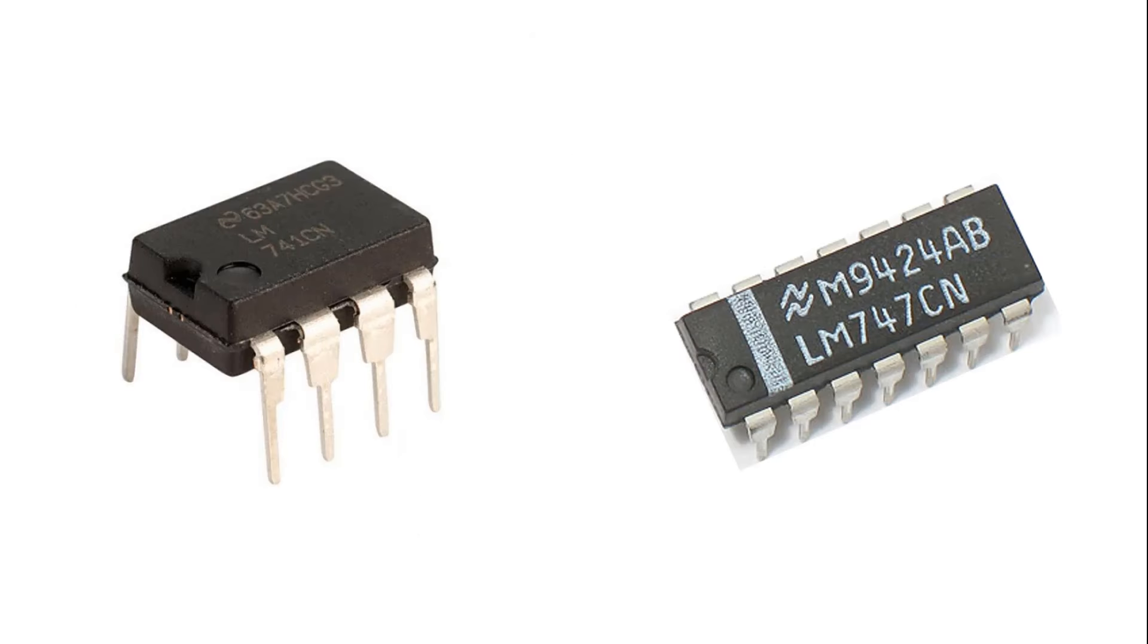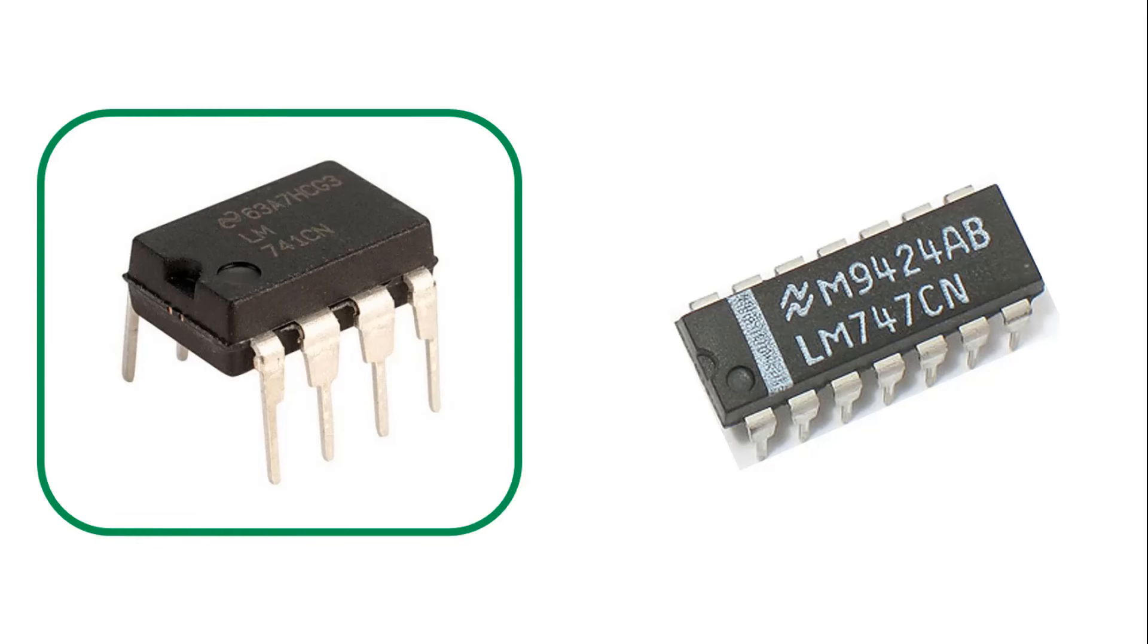Here, we will examine the connection diagram of the operational amplifier code 741, which is widely used and is called LM741 or UM741 according to the manufacturer. Besides, on the right, you can see the internal structure of the LM747 IC, which is also widely used and contains two LM741 operational amplifiers.